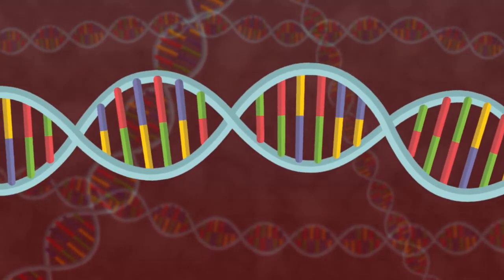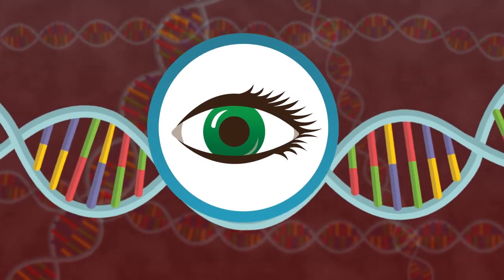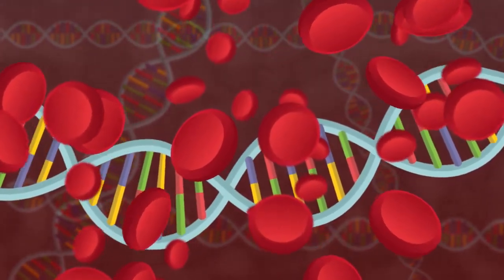DNA contains genes, which provide instructions on how to build different parts of an organism, such as light detection components in the eye or oxygen-carrying structures in red blood cells.